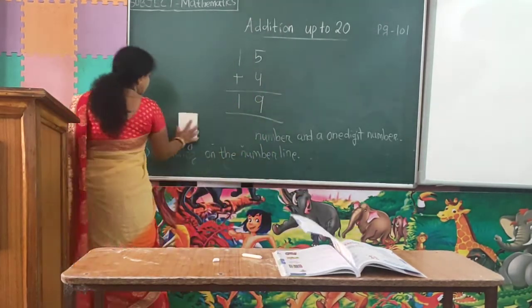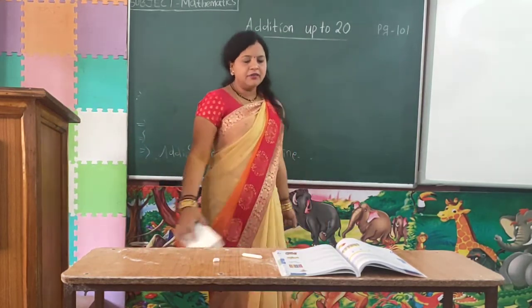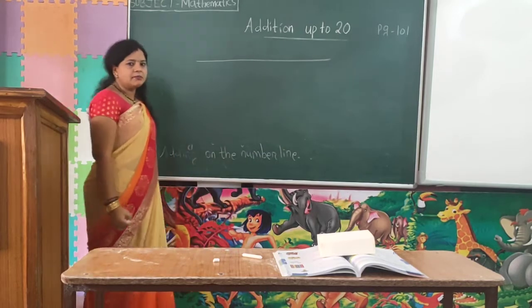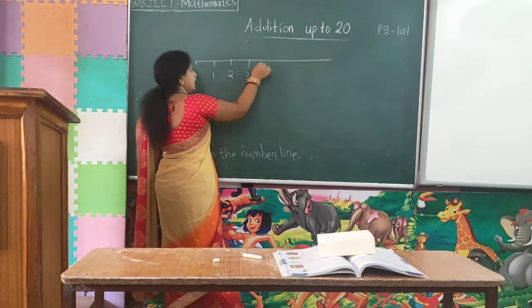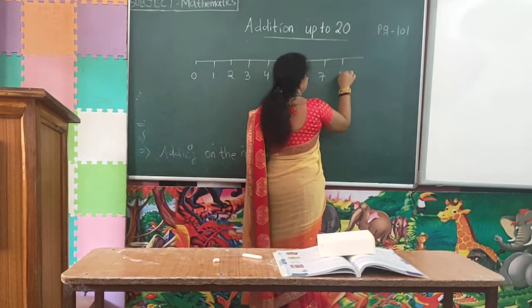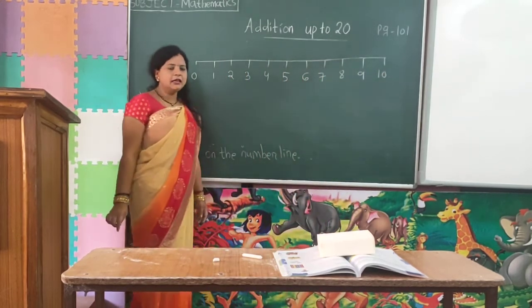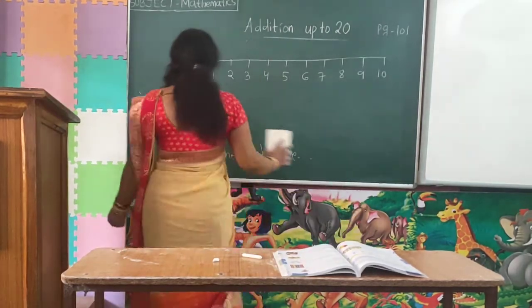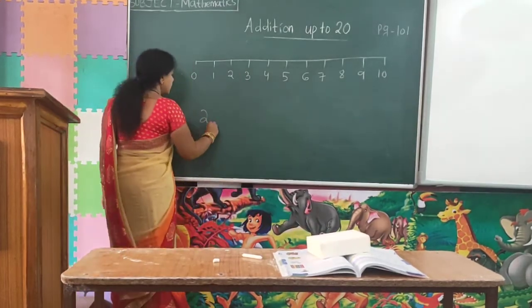Now we will learn about adding numbers using a number line. All of you know the number line — it is a straight line with numbers starting from 0: 0, 1, 2, 3, 4, 5, 6, 7, 8, 9, 10. In this number line we will learn how to find the answer.